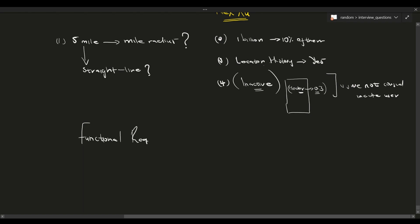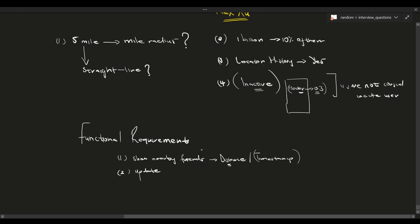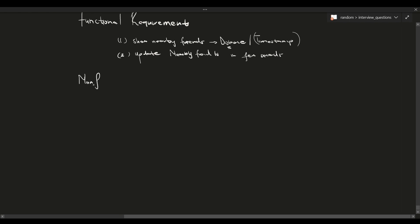For functional requirements, we know we need to show the user their nearby friends, including the distance and a timestamp indicating when that distance was last updated — so the user knows when their friend was at that location. We also need to update the nearby friends list every few seconds so the system remains reliable.